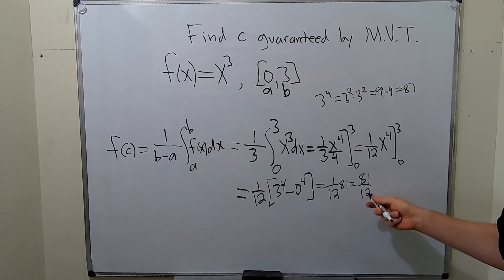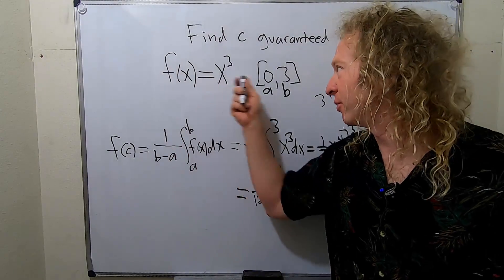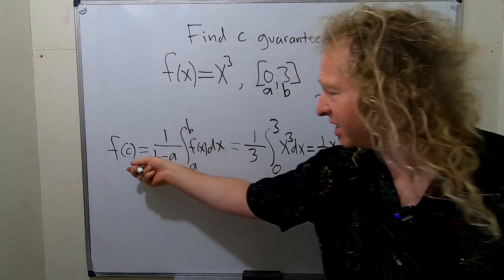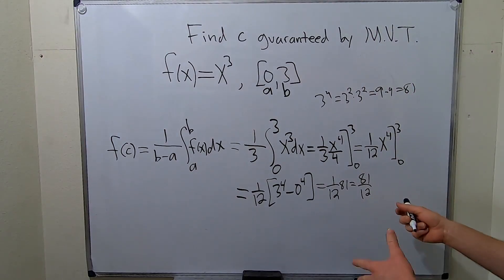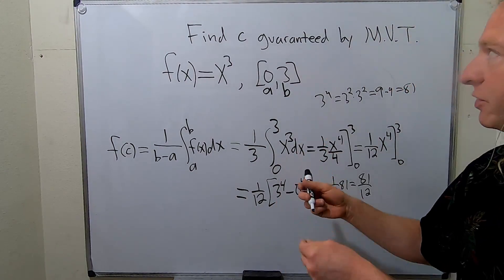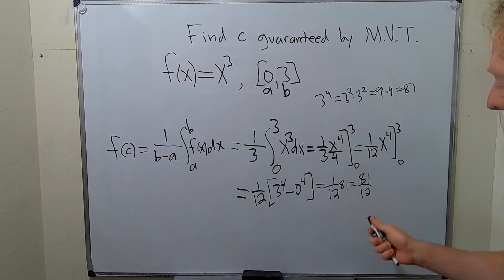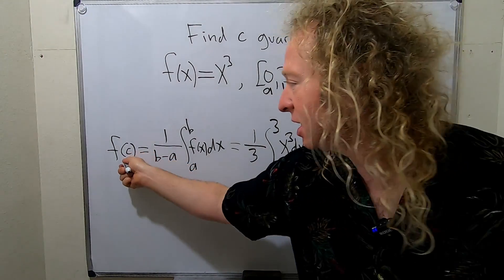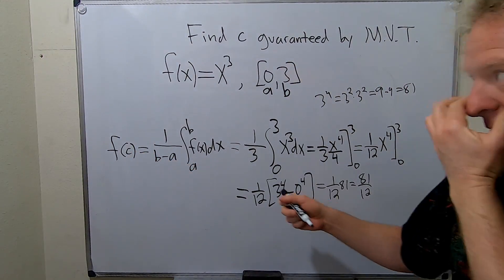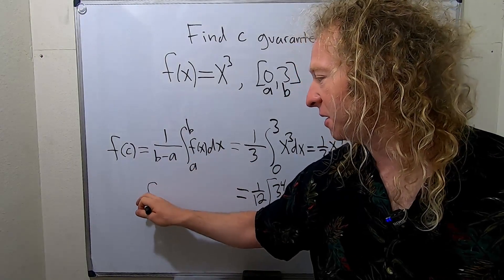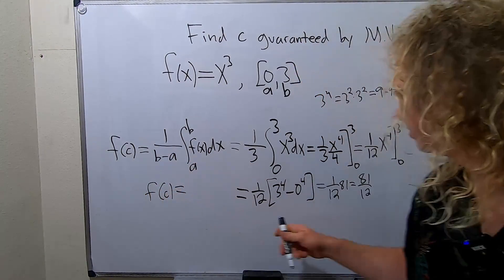So this is called the average value of the function over this interval. Because this is f of c. So that's not what the question wanted. The question wanted the value of c given by the mean value theorem for integrals. But this is called the average value. So now we have to find c. So f of c is equal to this. So basically, you just take f of c and set it equal to this.